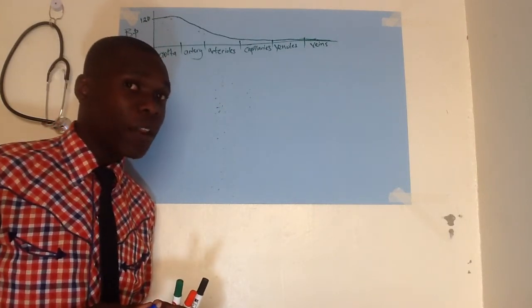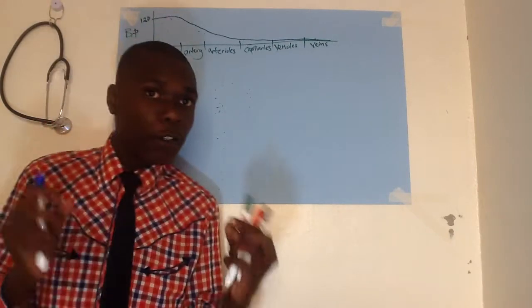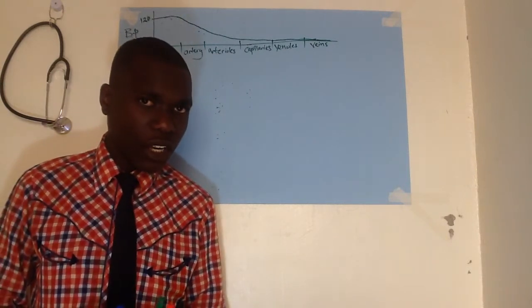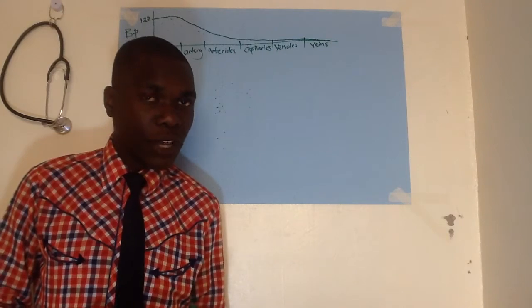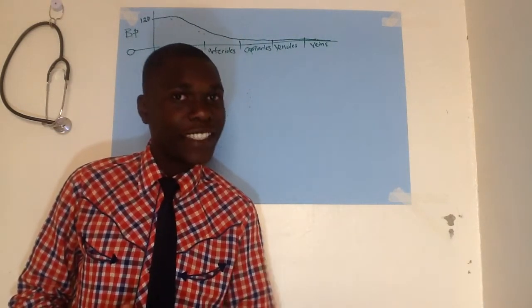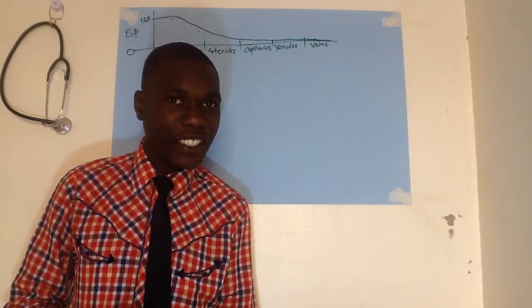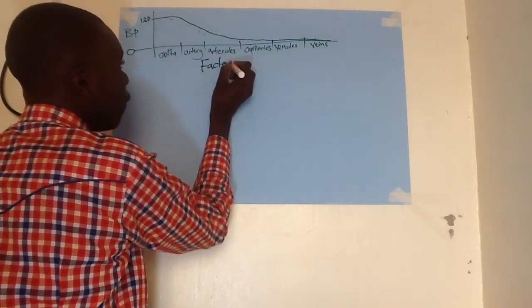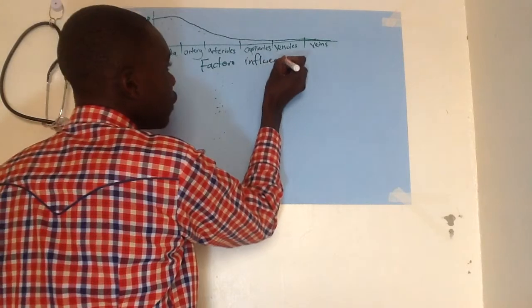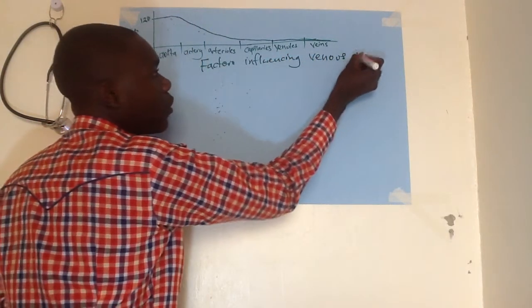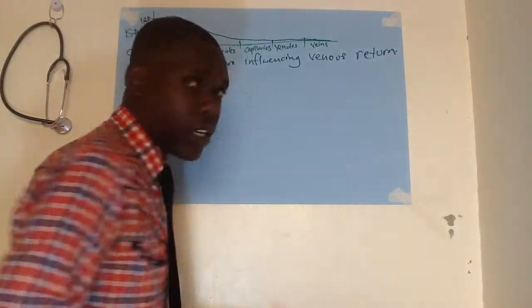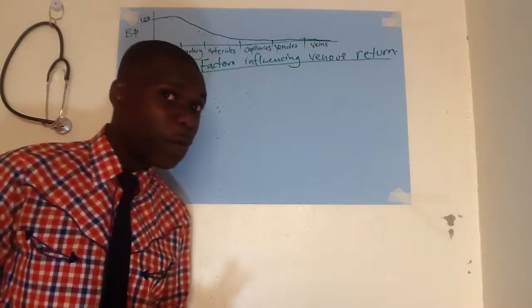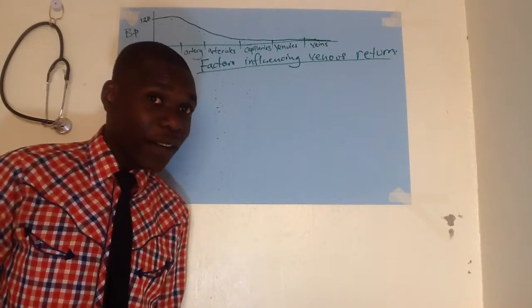So this vein is transporting blood at a pressure of zero, but this blood has to overcome gravity to go back to the heart. The body therefore had to develop specific mechanisms that assist in the transportation of blood back to the heart through the veins. These mechanisms we shall give the subheading: factors influencing venous return.